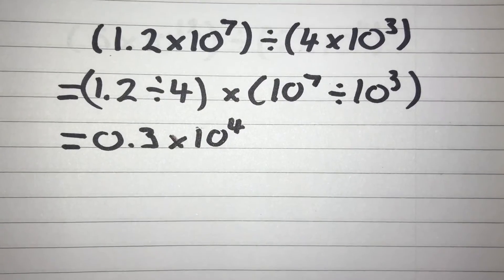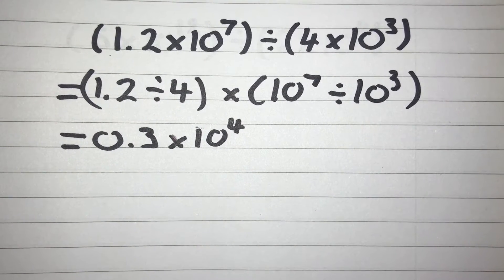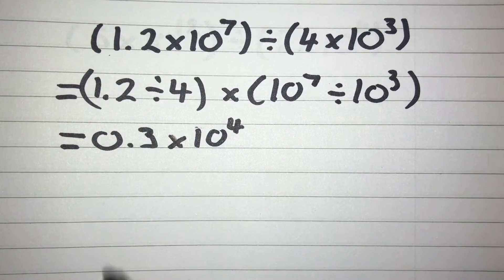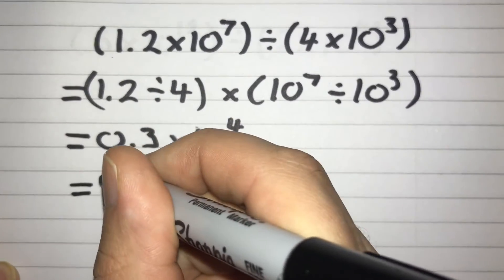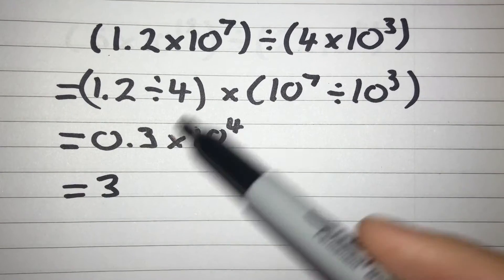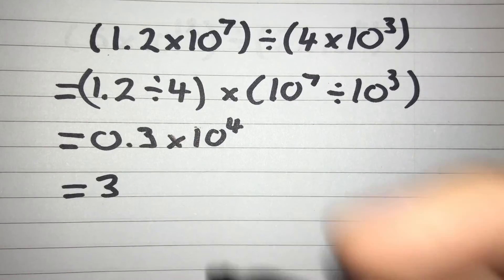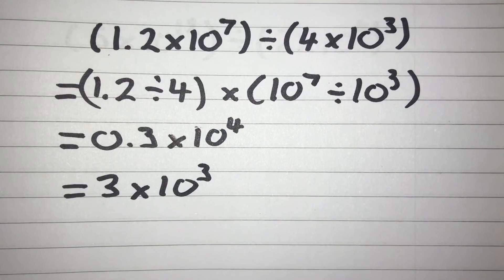Now let's double check that this is in standard form. We have 0.3 at the front, but that's smaller than 1, so this isn't quite in standard form — we need to correct it. To make sure the number at the front is between 1 and 10, we can simply multiply it by 10. So if we multiply 0.3 by 10 we get 3, but if we multiply by 10 we can't keep the 10 to the power of 4 — that would make it 10 times too big. So we actually reduce our power by 1: 10 to the power of 4 becomes 10 to the power of 3. So we end up with an answer of 3 times 10 to the power of 3.